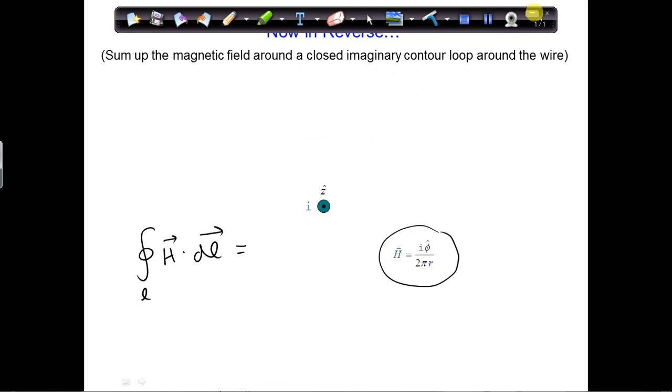Choosing a contour line that is shaped like a circle is most convenient because a magnetic field along a circle around the wire is constant, along a constant radius.